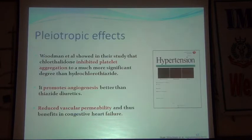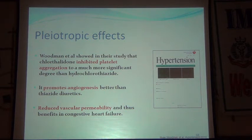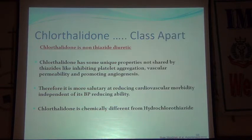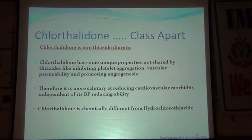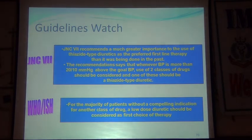The latest data shows chlorthalidone has pleiotropic effects: it inhibits platelet aggregation, promotes angiogenesis, and reduces vascular permeability — thus benefiting congestive heart failure. These unique properties are not shared by thiazide diuretics per se. Chlorthalidone is the most efficacious in reducing cardiovascular morbidity independent of its BP-reducing ability, and is chemically different from hydrochlorothiazide.